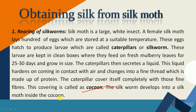The silkworm develops into a silk moth inside the cocoon. जब उसके ऊपर covering हुई तब तो वो silkworm था, लेकिन जब उसमें से insect निकल रहा था तो वो silk moth में convert हो गया.